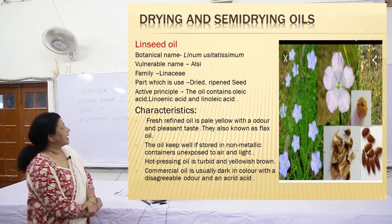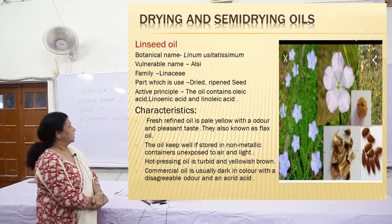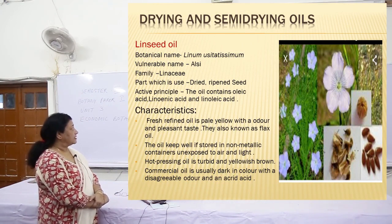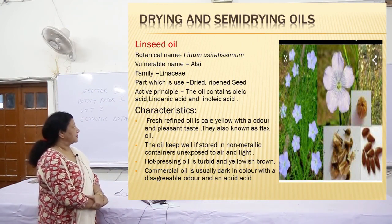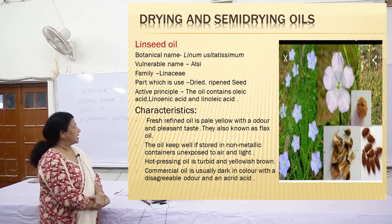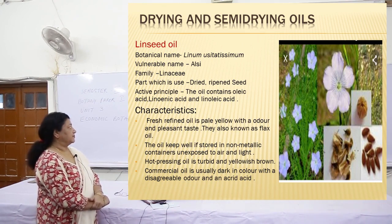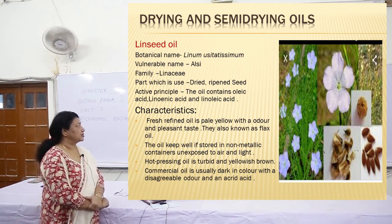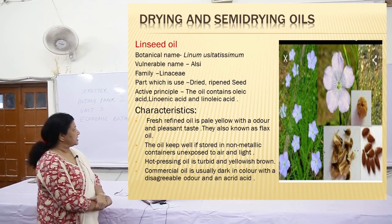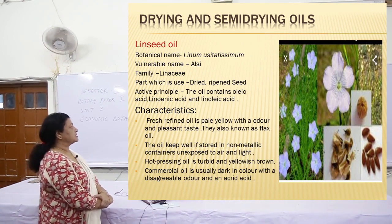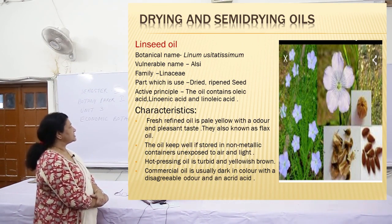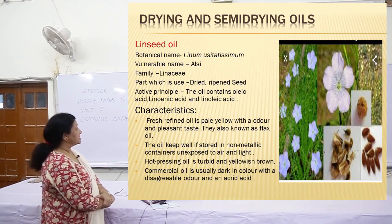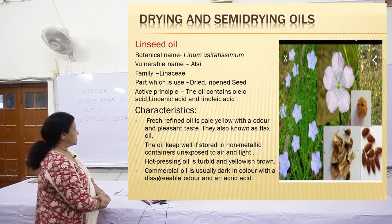The first drying and semi-drying oil is linseed oil. Botanical name: Linum usitatissimum. Vernacular name: alsi. Family: Linaceae. The part used is the dried ripened seeds. The active principle is that the oil contains oleic acid, linoleic acid, and linolenic acid in its various parameters.